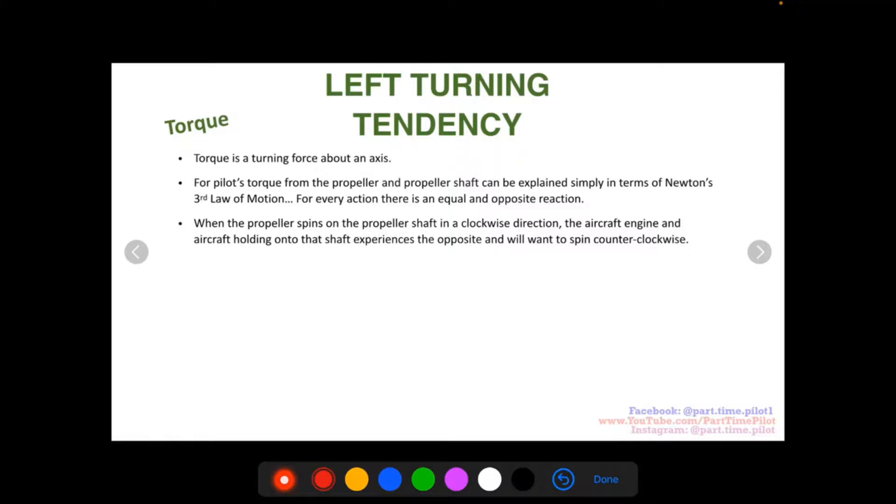So when the propeller spins on the propeller shaft in a clockwise direction, the aircraft engine and aircraft holding onto that shaft. Okay, so that the shaft comes out of the engine. The engine is spinning that shaft, but the shaft is connected to the engine, right?